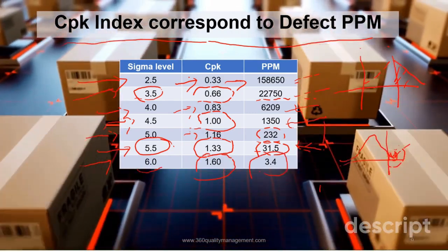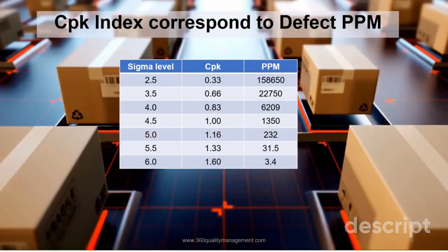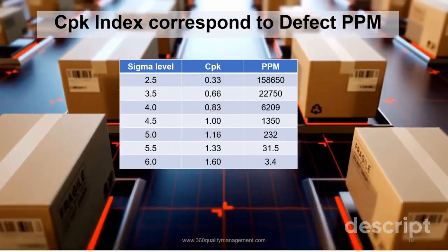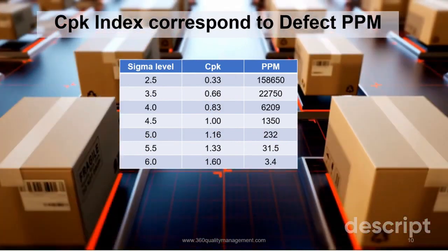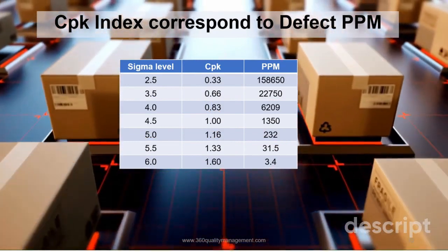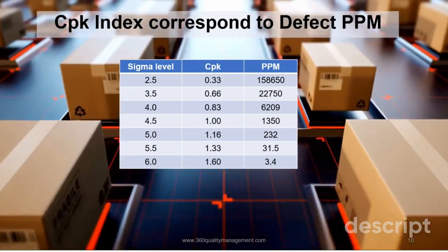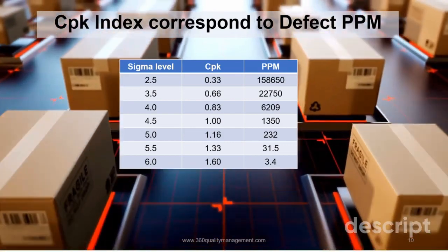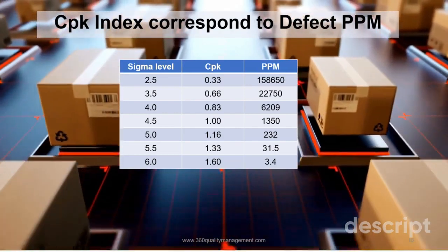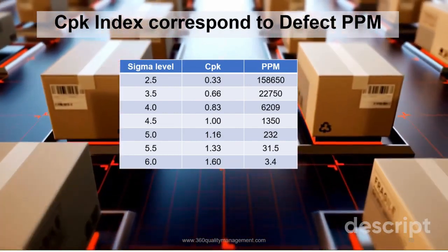The process capability study purpose is to use the CPK to estimate the process reject rate. Based on the statistical principles of the Z-test for continuous normally distributed data, we can then predict the process reject rate for a future process or a product parameter that we cannot measure 100 percent.